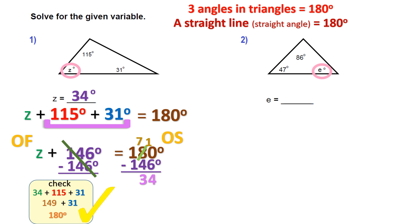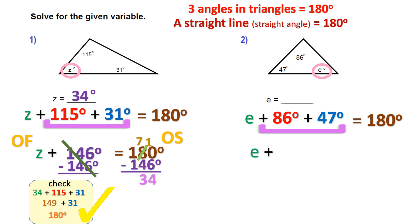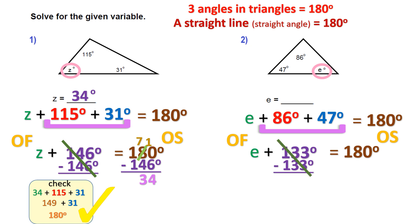Practice 2: locate the angle to find — E. I write my expression: E plus 86 plus 47. I change that into an equation because all three must equal 180 degrees. Do the math given: 86 plus 47 is 133. Bring down the variable, the addition sign, equals 180. Back to algebra — opposite function on the opposite side. I'm adding 133, so I subtract 133 to cancel it out and get E alone.